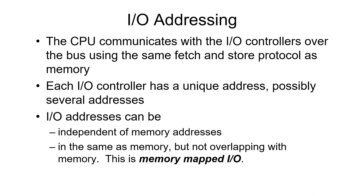The CPU has to be able to specify which device it wants to access, and it does that as if it were accessing memory. I/O controllers have an address on the bus — an address that the CPU can send information to by reading and writing in almost exactly the same way as it reads and writes from memory. There are basically two different I/O addressing schemes. In one case, the I/O addresses are completely independent of the memory addresses — the Intel processor uses this scheme. In another approach, the I/O devices overlap the memory addresses and share the same memory addressing space. This is known as memory-mapped I/O.